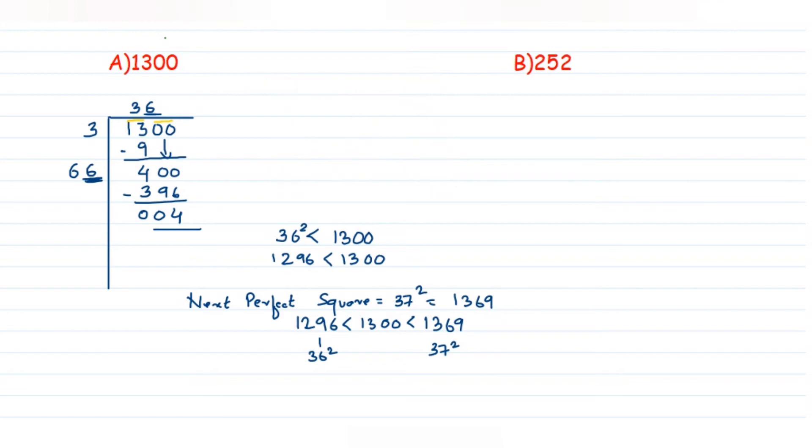So we can say that 37 square minus 1300. What is 37 square again? 1369 minus 1300 is nothing but 69. Therefore what number should be added? I have to add 69. That is, on 1300 I have to add 69 to get 1369, a perfect square. And what is square root of this number? It is 37.